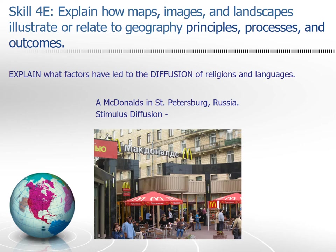Also with regards to 4E, another practice prompt: explain what factors have led to the diffusion of religions and languages based on this image. This is a McDonald's in St. Petersburg, Russia, which exemplifies stimulus diffusion — there is still a McDonald's, but menu items might be different, Ronald McDonald might look different in images, and obviously the language is going to be different.